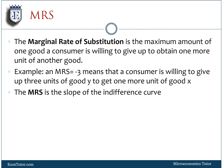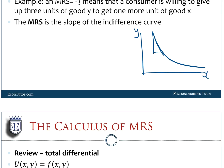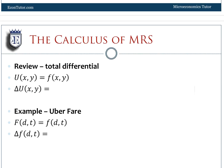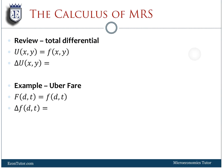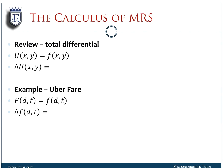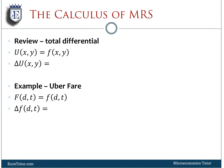For example, an MRS of negative 3 means a consumer is willing to give up three units of good Y to get one more unit of good X. So if this axis is good Y and this is good X, you're willing to give up three units of good Y to get one more unit of good X. This is the slope of the indifference curve — that's the MRS.